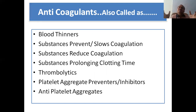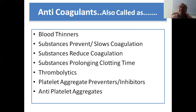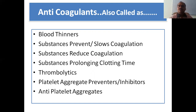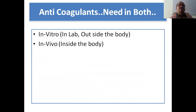Thrombolytics — a thrombus is already formed but will be broken down. Next, platelet aggregate prevention: platelets are one of the important factors for clotting of blood. Platelet aggregate preventers, inhibitors, or anti-platelet aggregators — we can use any name, just like God has several names and you can call him by any of them.